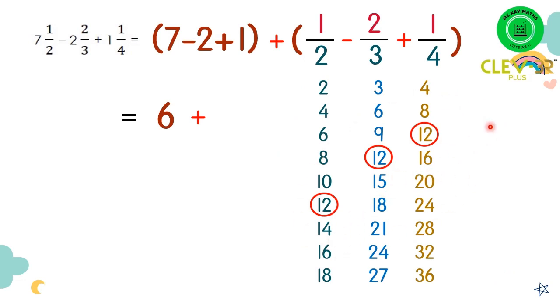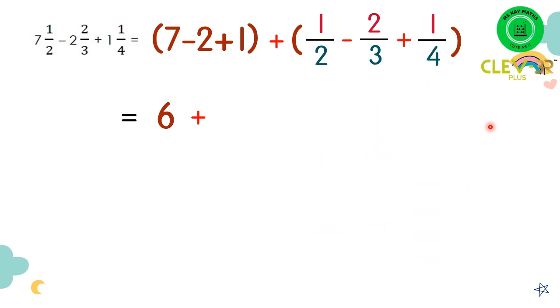So we can conclude that for these three proper fractions, the denominator is 12. All right, so for the numerator we need to find it.